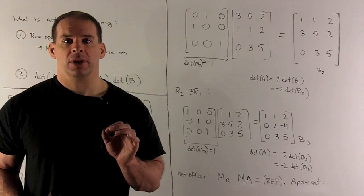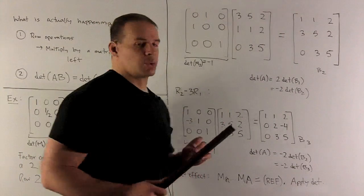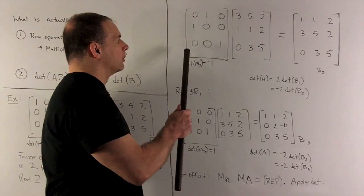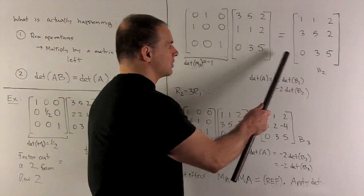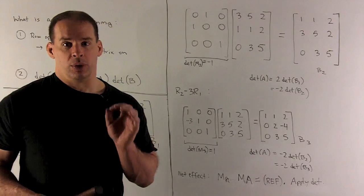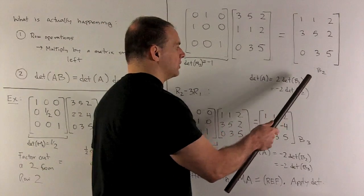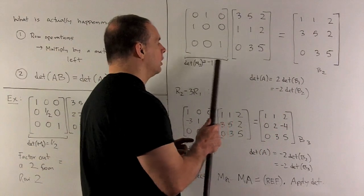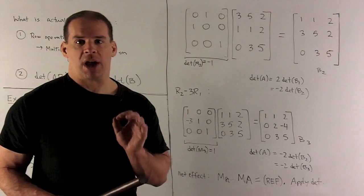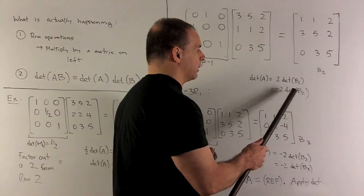Next, the switch. We want to go to row echelon form by putting that 1 where we have the 3, so we switch row 1 and row 2. The matrix that does that for us has a specific form — you should check that. Applying determinants, the determinant of that switch matrix is minus 1. So det(B1) equals minus det(B2). Keeping track of det(A), by back-substitution we have det(A) equals minus 2 times det(B2).